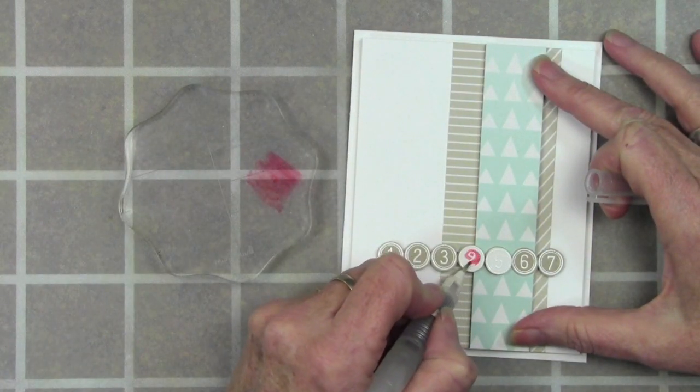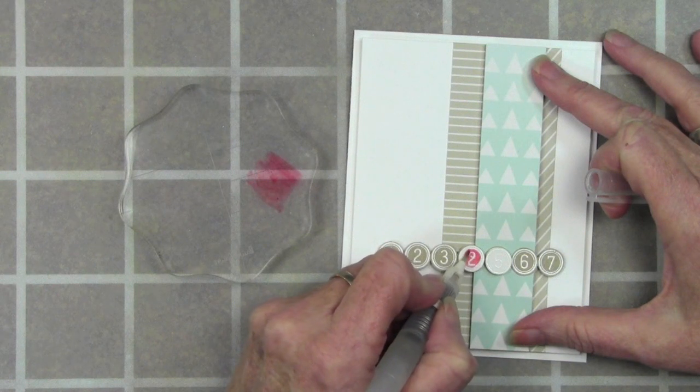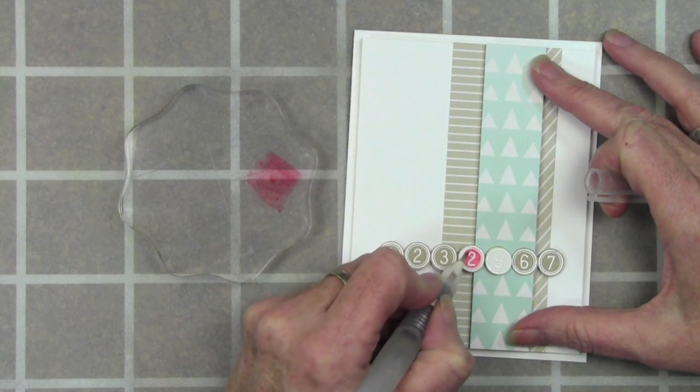I just grab some of that marker and then I can just paint right into the numbers. I'll continue doing that until I have both of the numbers painted in.